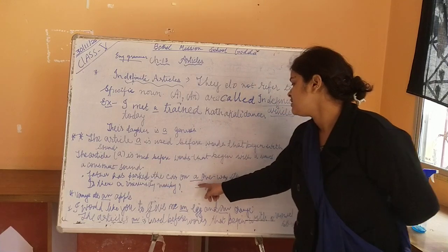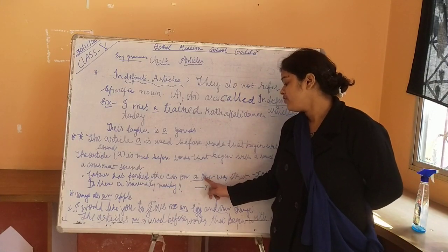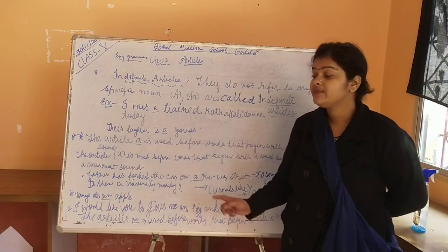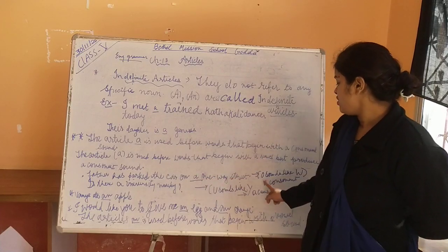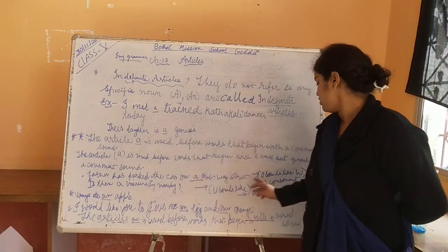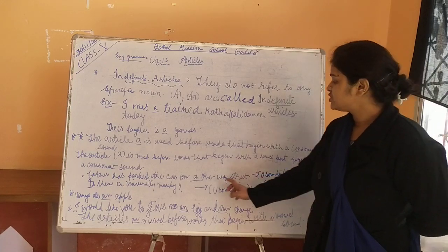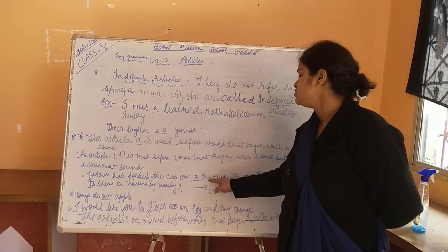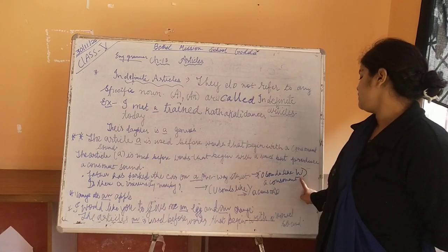For example: Father has parked a car on a one-way street. Here, A is used before the word 'one.' O is a vowel, but O sounds like W, so the vowel O is being heard as a consonant W. So A, which is an indefinite article, is used before this vowel word because O sounds like W, which is a consonant.